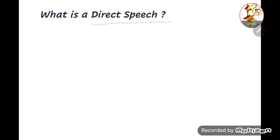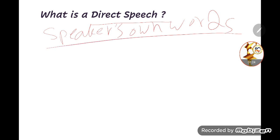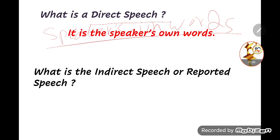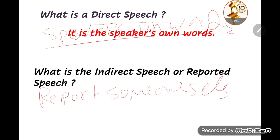If you remember, I told you that direct speech is your own words — words that you are speaking yourself. For example, I said 'I ate pizza yesterday.' This is my own words. But if you want someone else to say it, Tamara said that she had eaten pizza yesterday. We said that the reported speech or indirect speech is when we report someone else's speech.